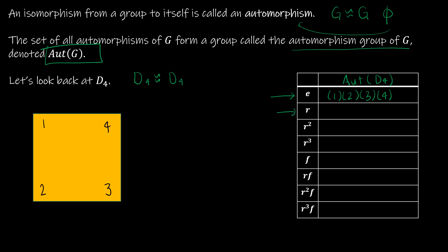R is another automorphism — each line of my table is going to be an automorphism. R takes 1 to 2, 2 to 3, 3 to 4, 4 back to 1. We're rotating 90 degrees counterclockwise. R squared takes 1 to 3 and 2 to 4. R cubed takes 1 to 4, 4 to 3, 3 to 2, and so on.